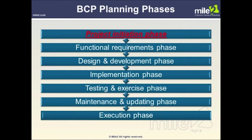The 7 phases of business continuity planning are: 1. Project initiation phase. 2. Functional requirements phase. 3. Design and development phase. 4. Implementation phase. 5. Testing and exercising phase. 6. Maintenance and updating phase. 7. Execution phase. Our discussion will begin at the top with the project initiation phase.